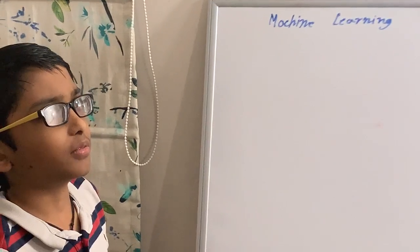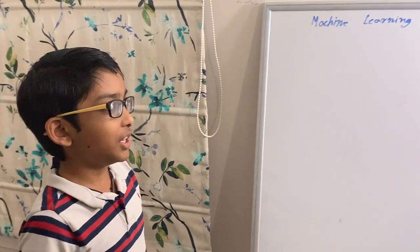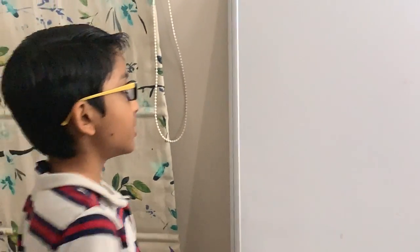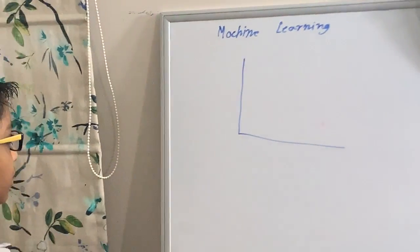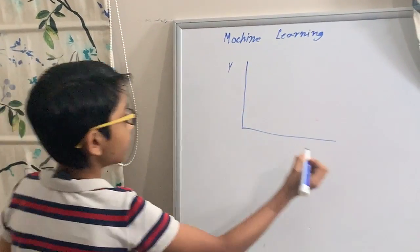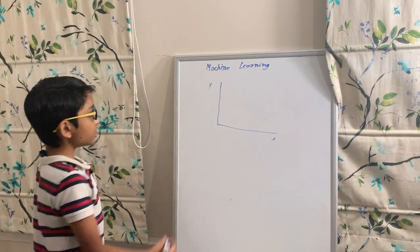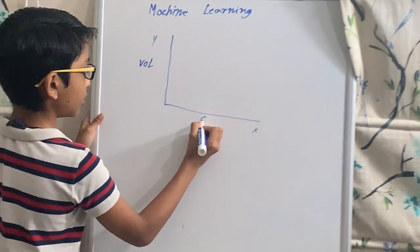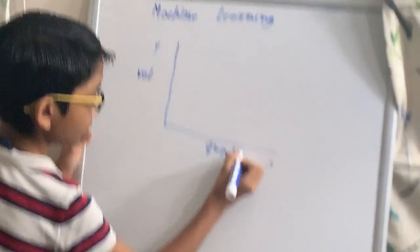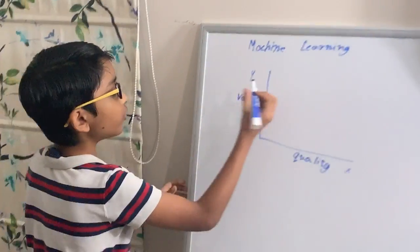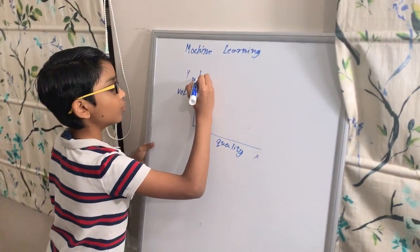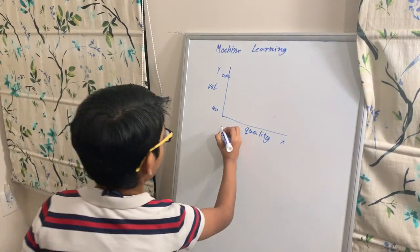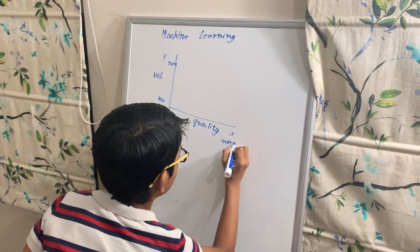Like more quality, or less sound or more sound. Let's draw an x-axis and a y-axis. Here on the y-axis comes in the volume — more or less — and here on the x-axis comes in the quality — more or less.